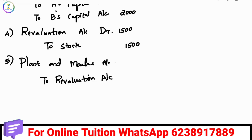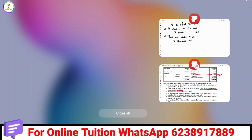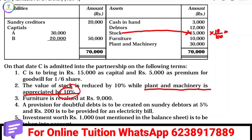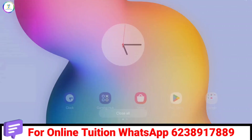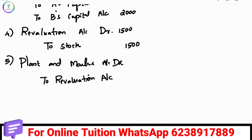Plant and machinery account debtor to revaluation. What is the amount? The amount is $30. That's what we are doing. This is the same. We are looking for the furniture.